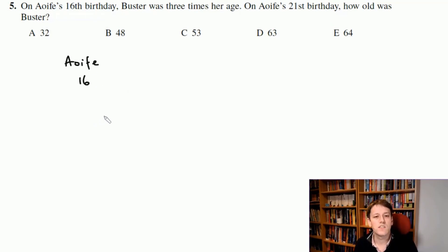On Effie's 16th birthday she is 16 and Buster is 3 times her age on that day, so when Effie is 16, Buster is 3 times 16 which is 48. If you don't know your 16 times tables, just add 16 together 3 times: 16, 32, 48. On Effie's 21st birthday she's going to be 5 years older than she was on her 16th birthday, so Buster must also be 5 years older and that means he will be 53. The answer is C.